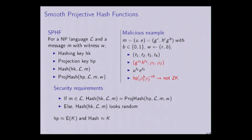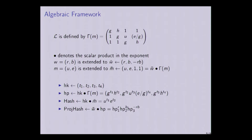This attack shows that smooth projective hash functions are not zero-knowledge. In particular, we cannot construct a simulator that simulates all elements without knowing the witness B. But smooth projective hash functions will still be our base to construct implicit zero-knowledge arguments. We introduce some algebraic framework — a restricted case of Cramer and Shoup's Diverse Groups framework. We introduce a new operation, 'bullet', the scalar product in the exponent. The language is defined by a matrix depending on word M, and all elements of our smooth projective hash function can be computed as scalar products in the exponent, equipping us with nice algebraic properties.